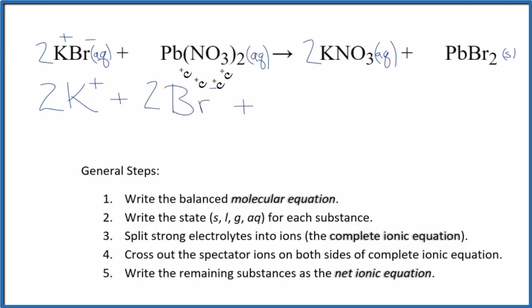And then for lead, we have to look at what it's bonded to since it's a transition metal. Nitrate, always one minus, and we have two of them, has to be 2 plus. So this is the lead 2 ion, Pb2+. And then we have two nitrate ions, NO3-. These are the reactants in our net ionic equation.